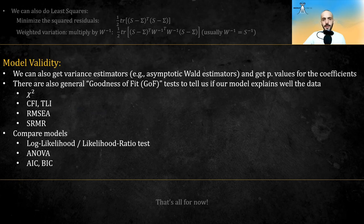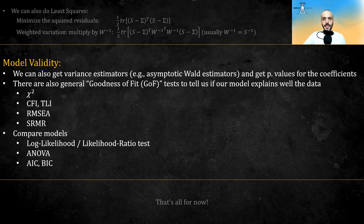Now, in this video, I will only mention briefly the topic of model validity. To test the model validity, we can also get variance estimators, for example, asymptotic Wald estimators. And from them, get the p-values for the coefficients. There are also general goodness of fit tests that tell us how well our model explains the data. And these include the over-conservative chi-square. There are also CFI, TLI, RMSEA, SRMR. Again, I won't go into them in this video. And there are also measures to compare different models and see which model explains the data better. One way of doing so is comparing the log likelihood or conducting a likelihood ratio test, AIC, BIC, etc.